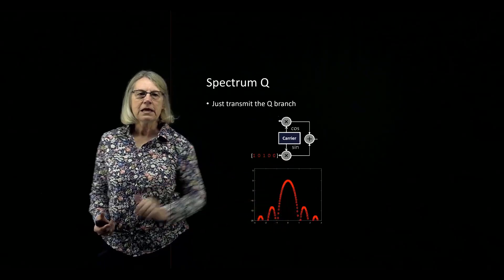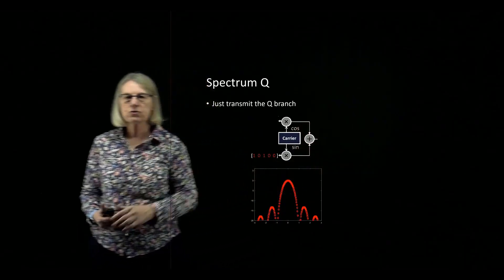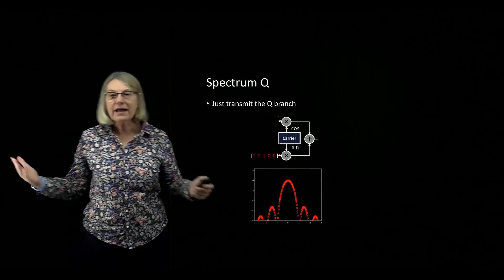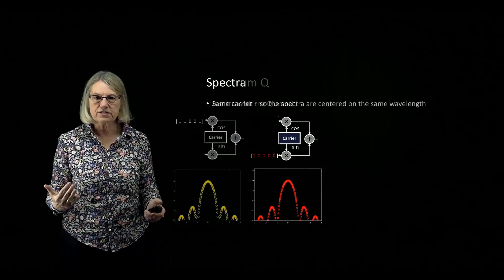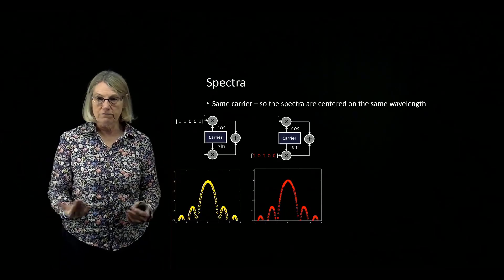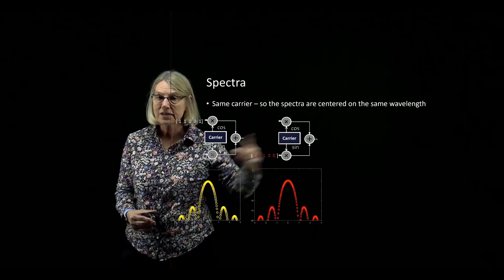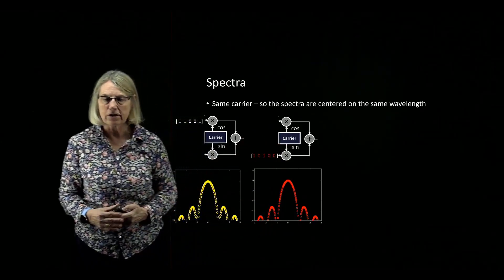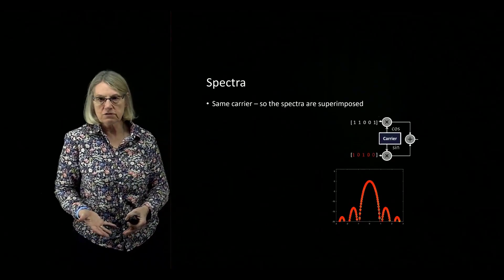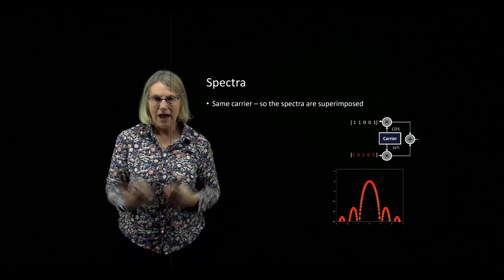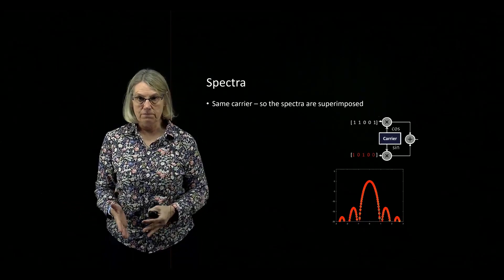So at this point, I'm going to combine these two outputs from the in-phase and the quadrature branches into one. Remember, they're centered on the same frequency because they're using the same carrier. So when I combine them, they are superimposed — right on top of one another — sent through the same width of spectrum.